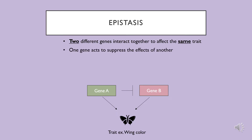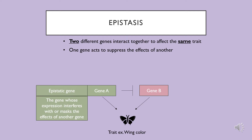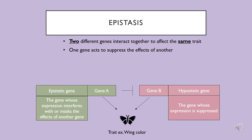In this scenario, for example, two different genes, gene A and gene B, interact to affect wing color, and gene A's expression works to suppress the effects of gene B. In epistasis, the gene whose expression interferes with or masks the effects of another is known as the epistatic gene, so gene A is acting as the epistatic gene in this example. The gene whose expression is suppressed is known as the hypostatic gene, which is gene B in this example.